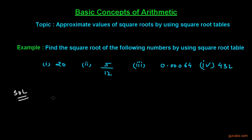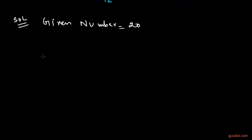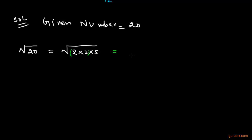In part 1 we are given the number 20, and we have to find the square root of 20 by using the square root table. We shall write 20 inside the radical and factorize it: 20 = 2 × 2 × 5. There is a pair of prime factor 2, so we take one 2 out of the radical, giving us 2√5.